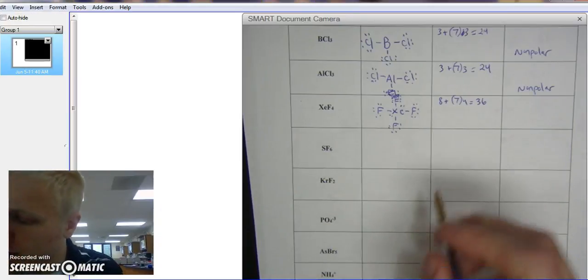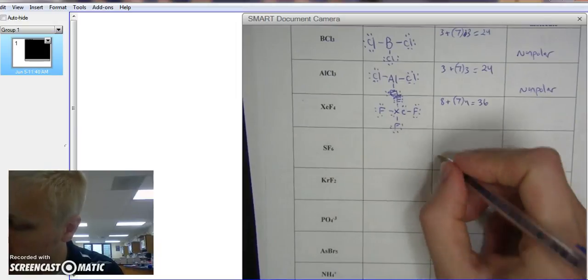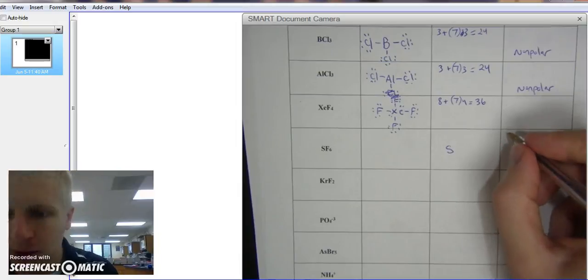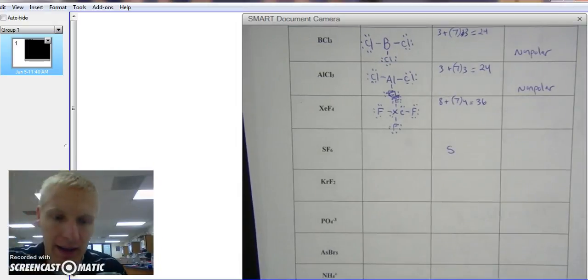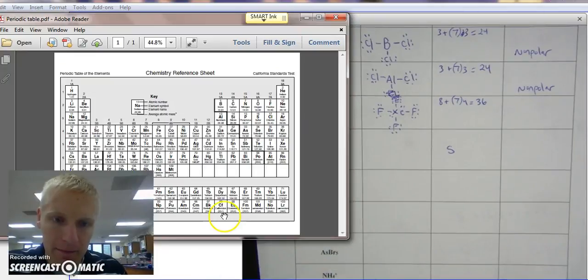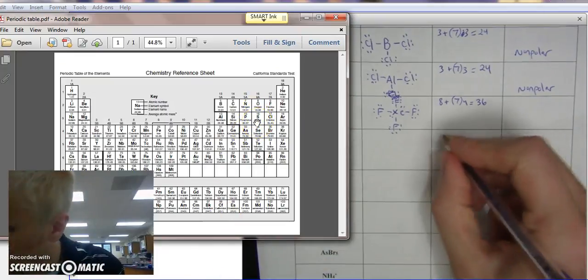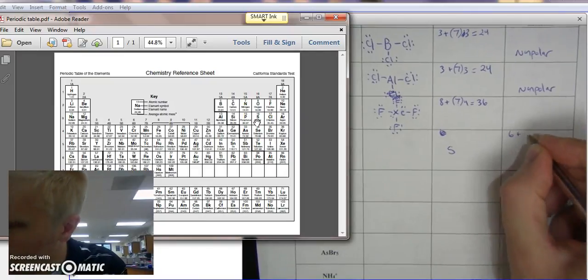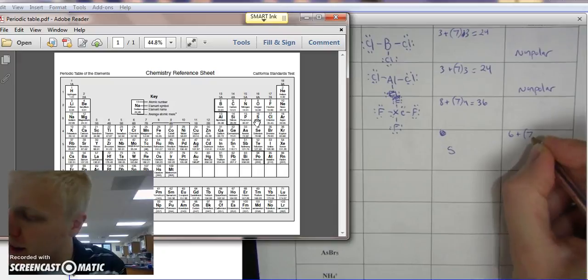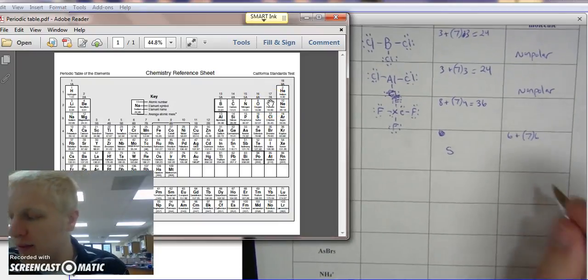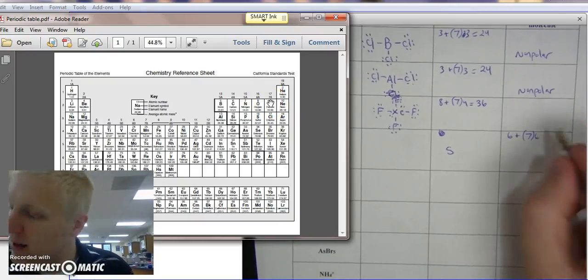All right, going over another problem. We have SF6. So sulfur is in the center, but let's count how many outer electrons we have. Sulfur, looking at it, has 6 outer electrons. We'll put it over here, 6. And fluorine has 7, it's a halogen, and there's 6 of them. So it has 7. It's in column 17 or 7A. So 6 times 7 is 42, plus 6, 48.